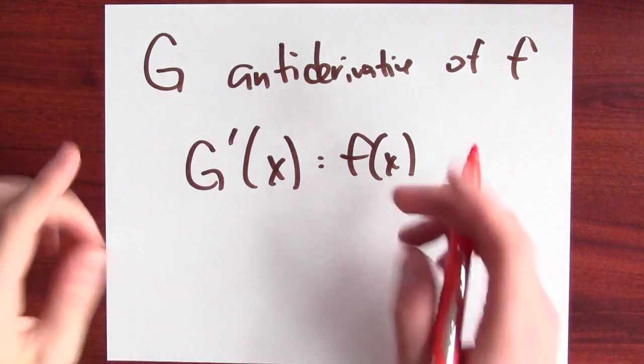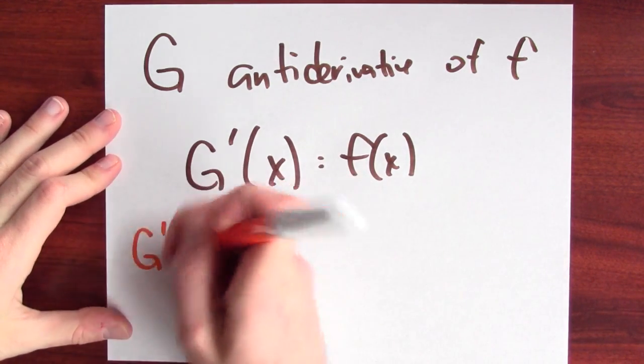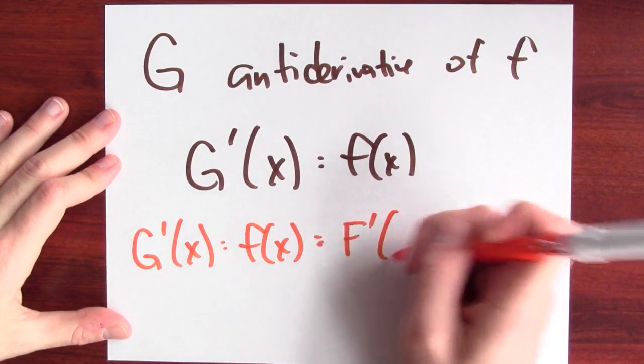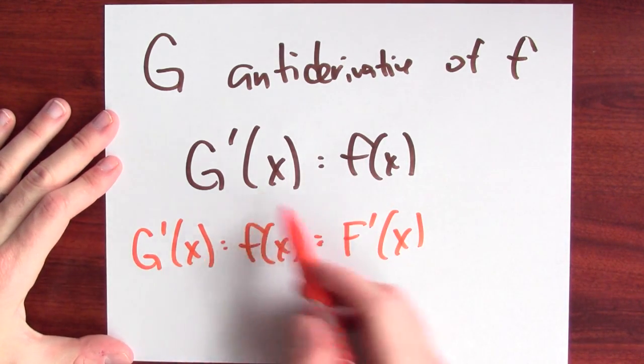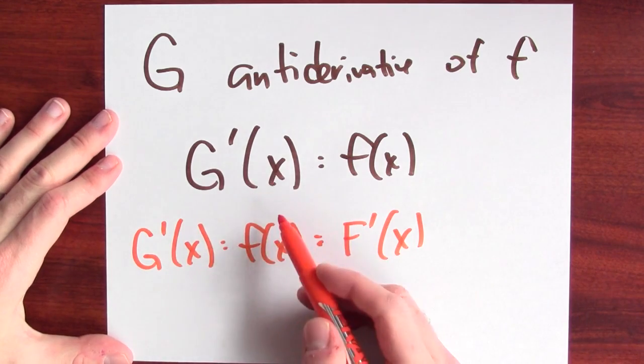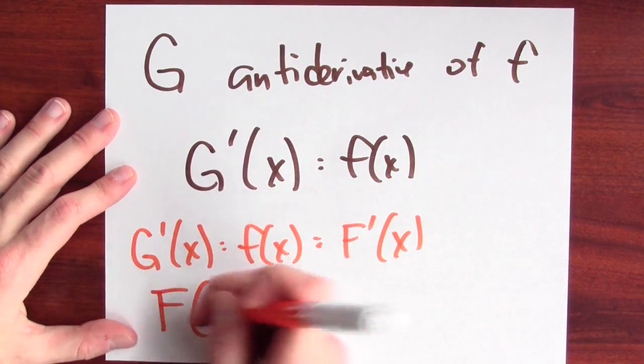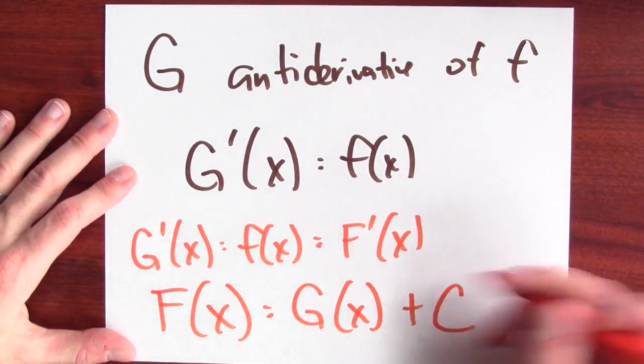How does big G compare to big F? Well, I also know that big F differentiates to little f. So I know that big G's derivative is little f and that's the same as the derivative of big F. So I've got two functions whose derivative is the same. What does that tell me? Well, by the mean value theorem, that means that big F must be big G plus some constant.